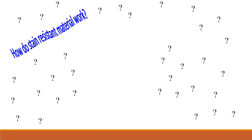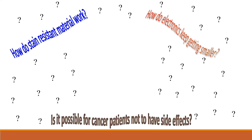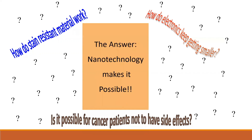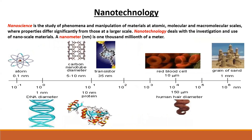Questions like how do strain resistant materials work, how do electronics keep getting smaller, and is it possible for cancer patients not to have side effects — the answer is that nanotechnology makes it possible. Nano means 10 to the power minus 9. Nanoscience is the study of phenomena and manipulation of materials at atomic, molecular, and macromolecular scales where properties differ significantly from their bulk counterparts. Nanotechnology deals with the investigation and use of such nanoscale materials.